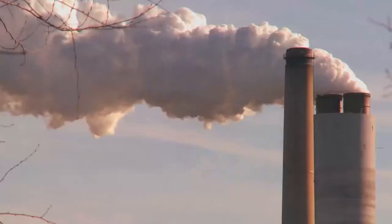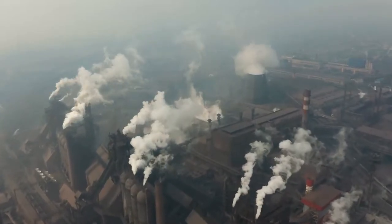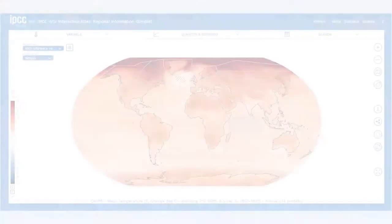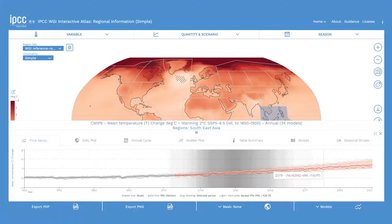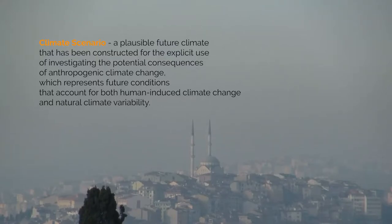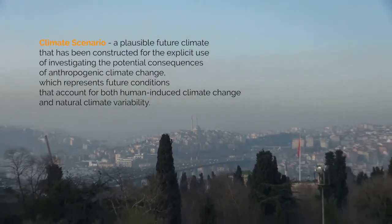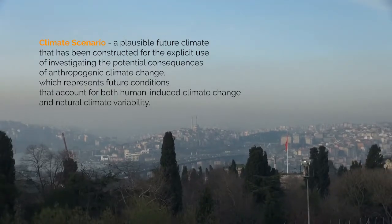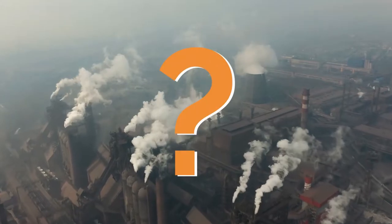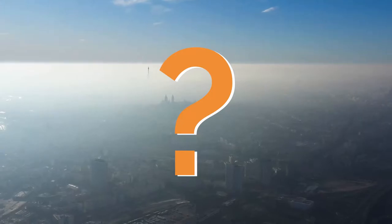Climate scenarios are storylines about how the world will develop along possible global development pathways when considering the amount of greenhouse gas emissions in the future. According to the IPCC, a climate scenario refers to a plausible future climate constructed for the explicit use of investigating the potential consequences of anthropogenic climate change, representing future conditions that account for both human-induced climate change and natural climate variability. An important application takes the form of what-if analyses — for example, what happens to our future climate if the greenhouse gas concentration doubles by the mid-21st century.